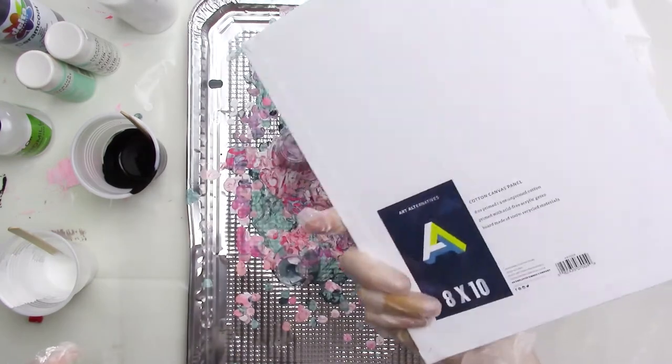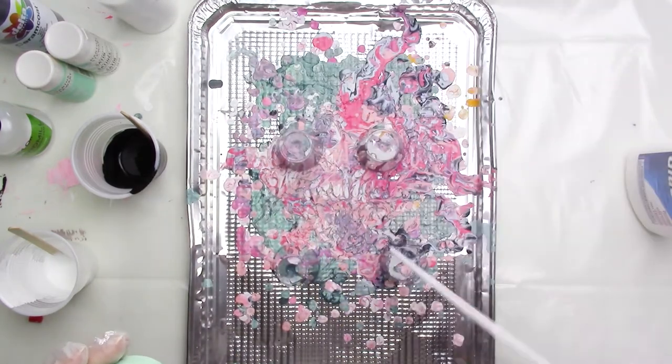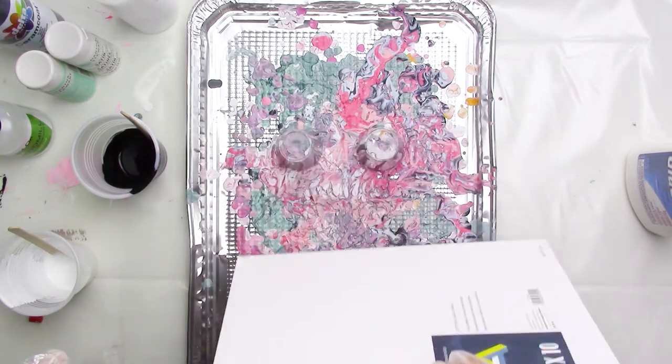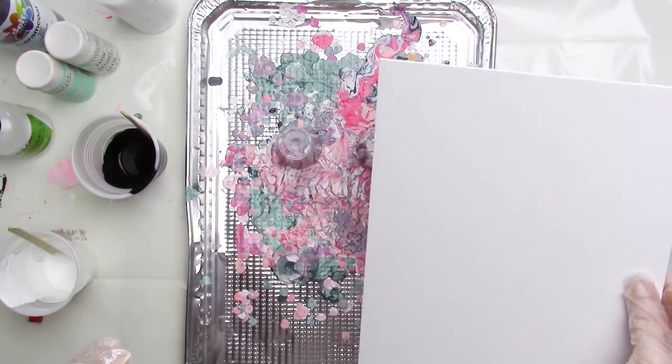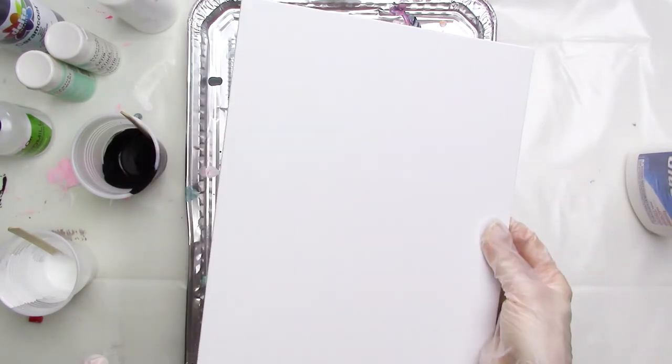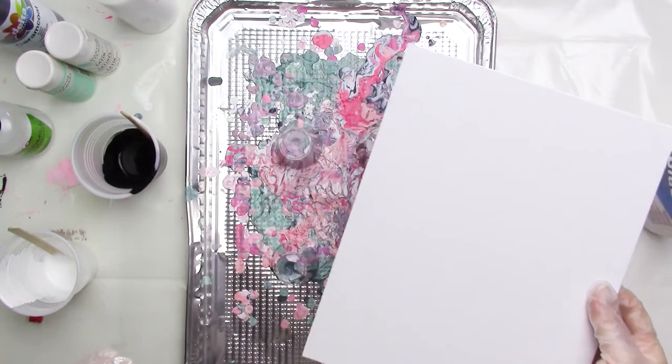I've got an 8x10 canvas panel here, and I have it propped up on these 4 little plastic shot glasses on a foil tray so the paint can run off the sides of the canvas without a problem. This setup makes clean up a lot easier for me since I don't have a dedicated space for paint pouring.